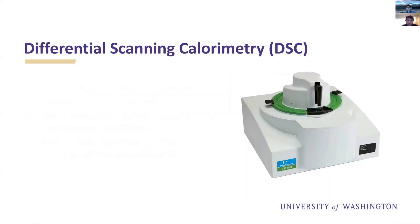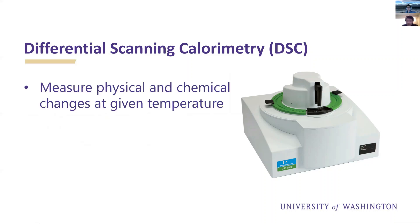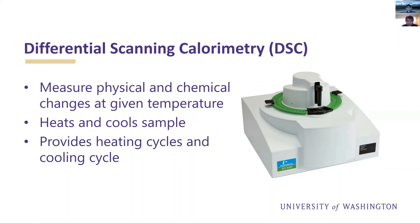Moving on, we have our next test: differential scanning calorimetry, or DSC. The DSC measures the physical and chemical changes at a given temperature. This test heats and cools the sample through heating cycles and cooling cycles, which provide information such as peak temperatures, enthalpy values, and glass transition temperatures — a lot of important information that we can acquire from these graphs.